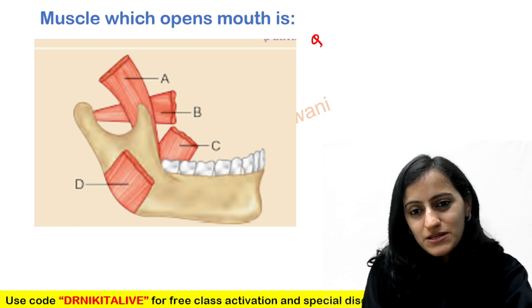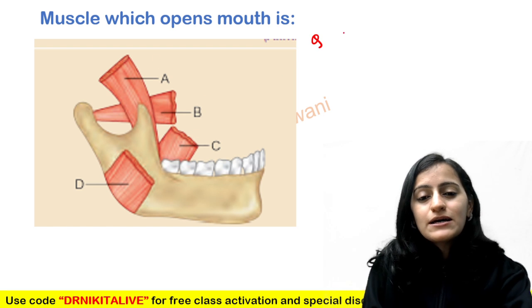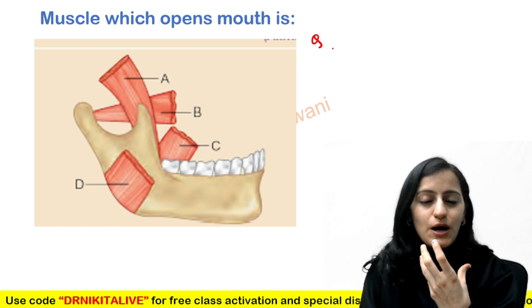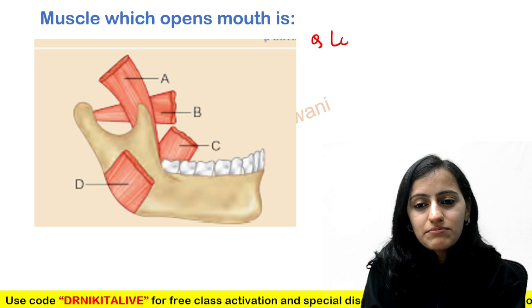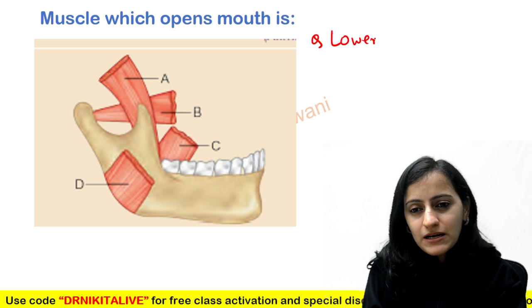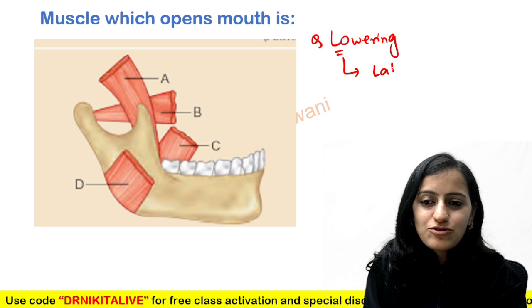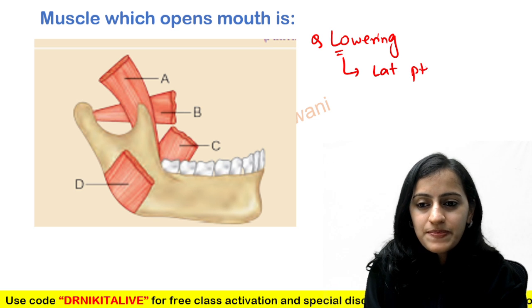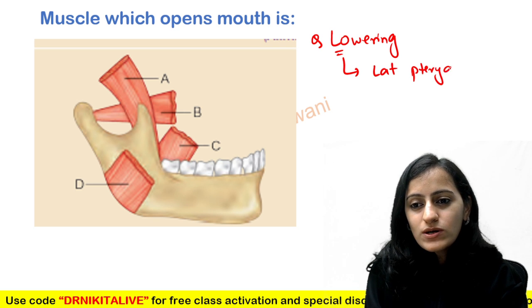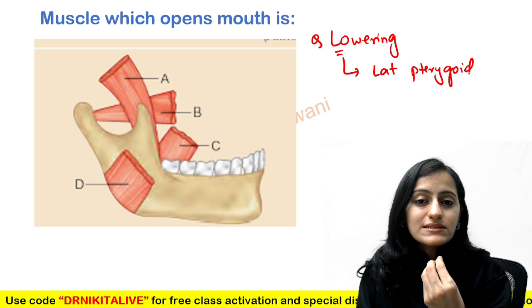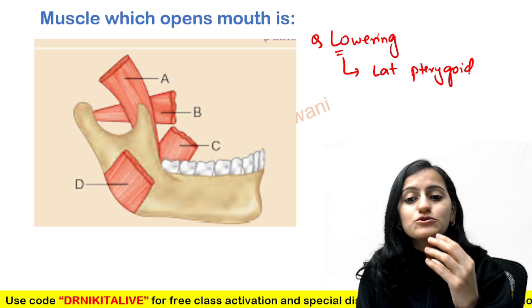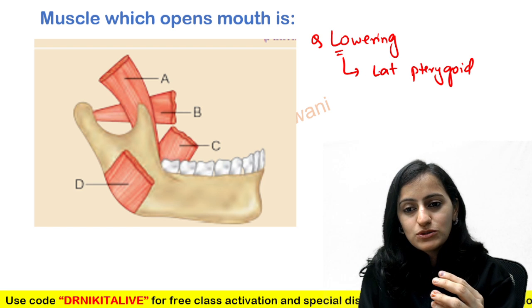The first thing to remember is opening the mouth, that is lowering the mandible. Lowering the mandible — L for L — is lateral pterygoid. It is only lateral pterygoid which lowers the mandible, that is, opens the mouth.